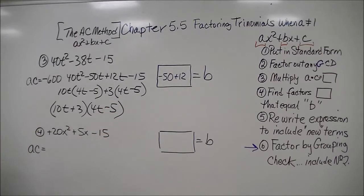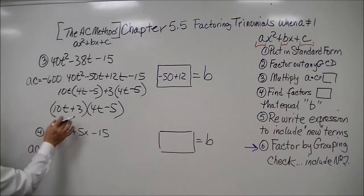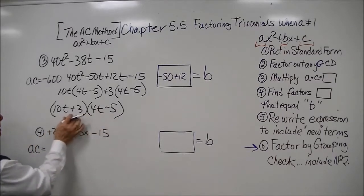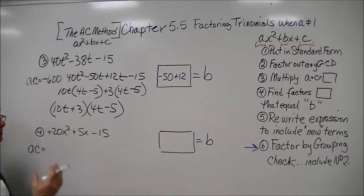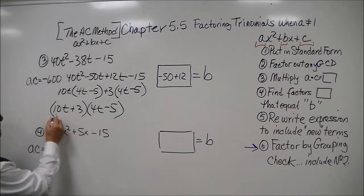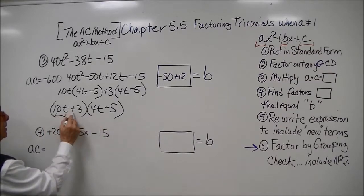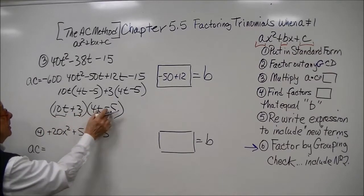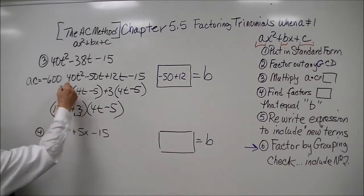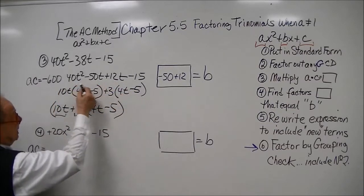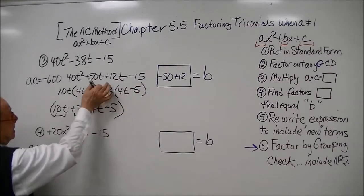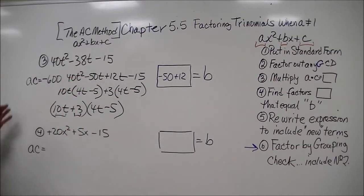Back in section 5.1, we talked about multiplying a binomial in the traditional way — multiply this by that, then this by that, distribute and collect like terms. We are undoing that traditional multiplication from the beginning of chapter 5. It's a good technique when a is not 1.